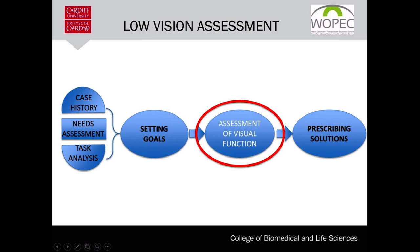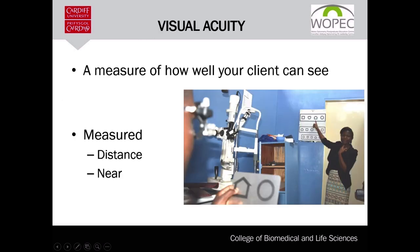When assessing visual function, we seek to obtain enough information about our client to enable us to describe in absolute detail the measurable state of their visual performance. It also gives the practitioner baseline data and parameters to identify the weaknesses and strengths of the system to help develop the right solution. The first and most common assessment of visual function is visual acuity.